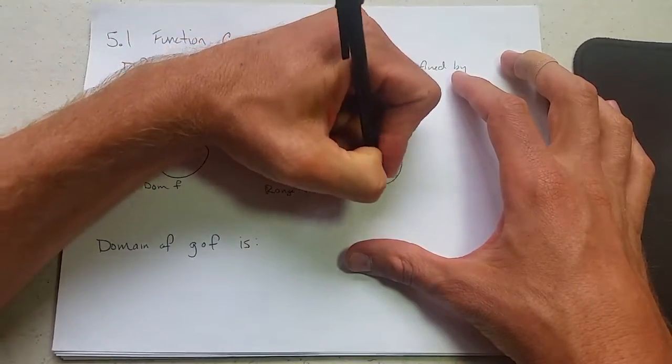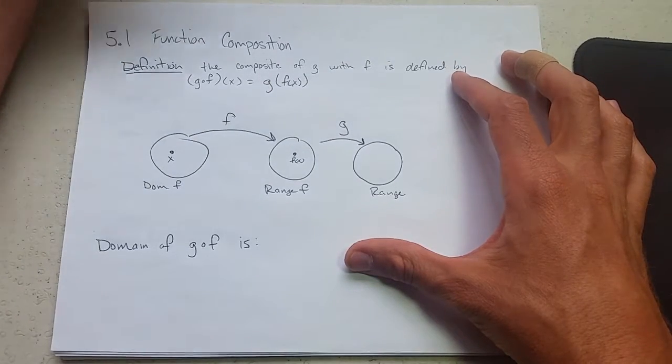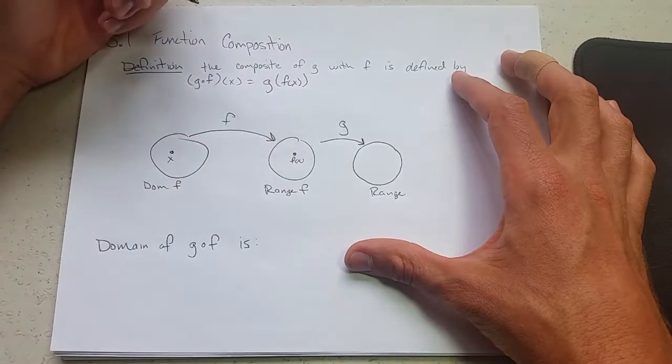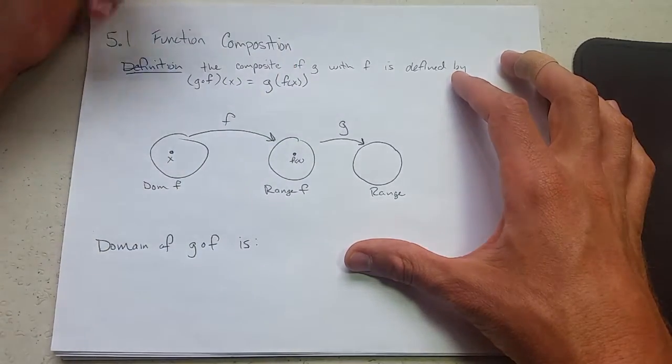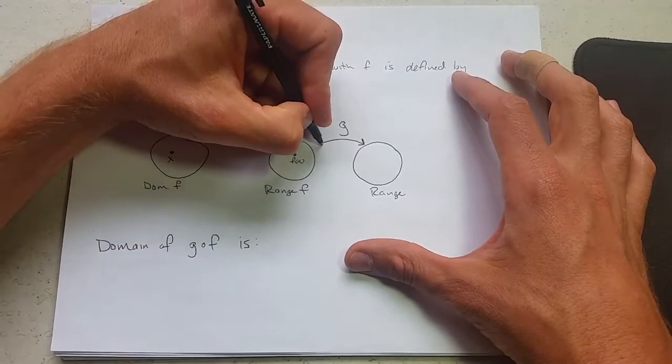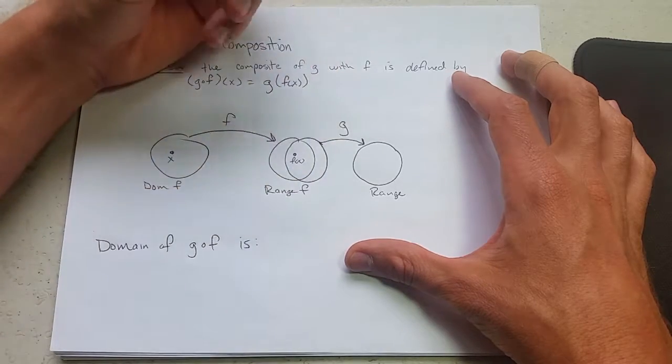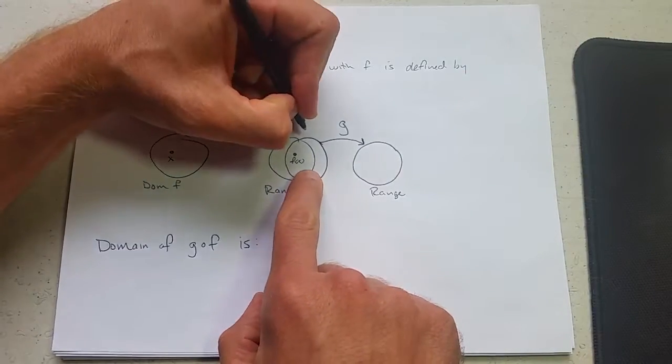And this is going to be the range. Now it looks like it should be the range of g. But we have to be a little bit careful because the output, the range of f, may not equal the domain of g. Maybe things that f outputs that g is not allowed to input. So there's actually going to be another set over here, and this is the domain of g.